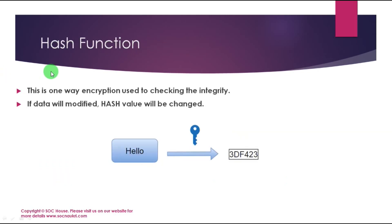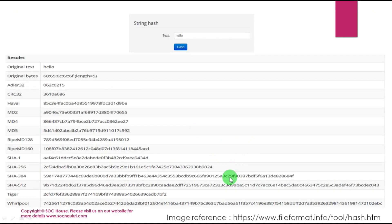Hash function is a one-way encryption used to check the integrity of data. If data is not modified, the hash value will remain the same. If data is modified, the hash value will change. It generates one unique value based on the algorithm used, and that unique value will remain the same every time the same string is passed through the algorithm.